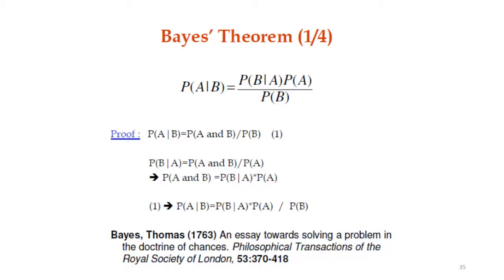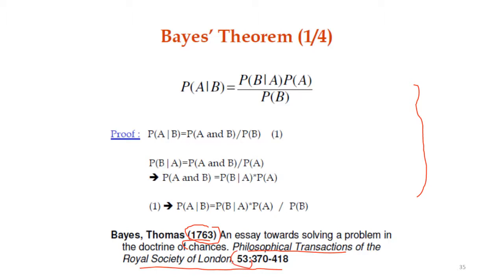Before we start, we need to understand Bayes' Theorem. You are not required to know how the theorem was created, but you need to know how it is applied to incorporate additional information into the prior probability. This theorem was proposed in 1763 — more than 250 years ago — by Bayes, presented in a paper titled 'An Essay Towards Solving a Problem in the Doctrine of Chances,' published in Philosophical Transactions, volume 53, pages 370–418.